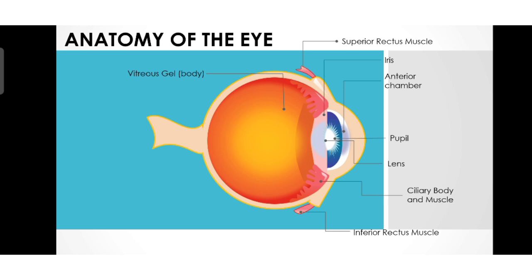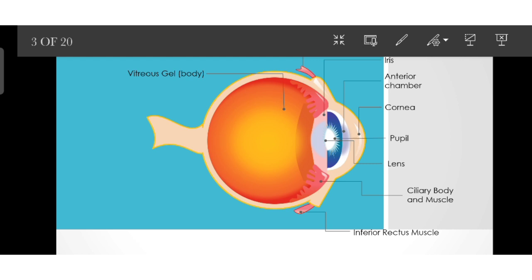Next we have the cornea. The cornea is the transparent front part of the eyeball through which light passes. We must remember that there are no blood vessels present in the cornea, but there are lots of nerve endings present.